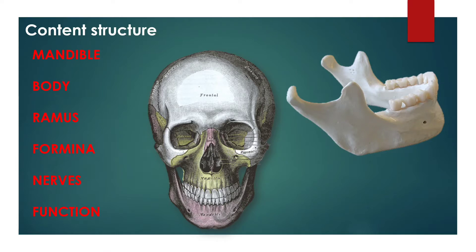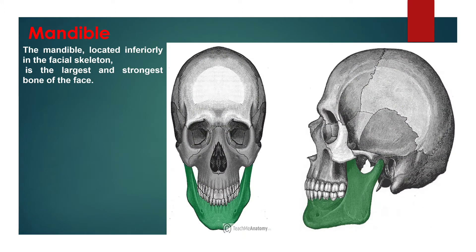The body and the ramus meet on each side at the angle of the mandible. The mandible, located inferiorly in the facial skeleton, is the largest and strongest bone of the face. It forms the lower jaw and acts as a receptacle for the lower teeth. It also articulates on either side with the temporal bone, forming the temporomandibular joint.